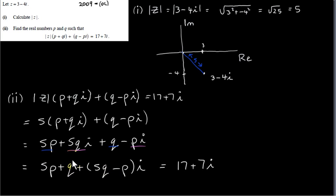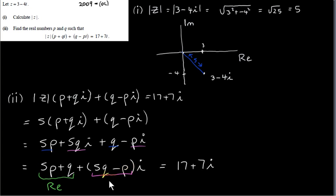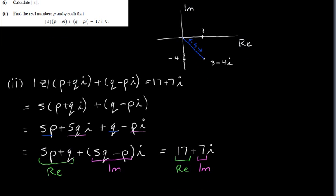What I've done is written the left hand side of this equation as a single complex number. The real part is everything that does not involve i — that's 5p plus q. The imaginary part is the coefficient of i, which is 5q minus p. When you're solving complex equations, try to write both sides of the equation as a single complex number. The right hand side is already in that form — real part is 17, imaginary part is 7. The only way two complex numbers can equal each other is if the real parts are equal and the imaginary parts are equal.